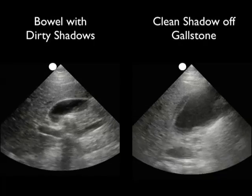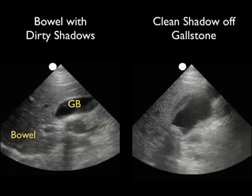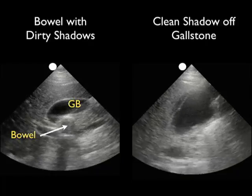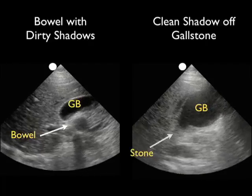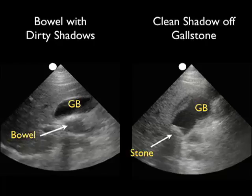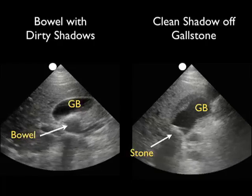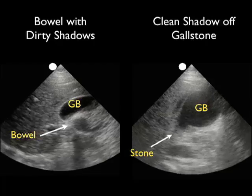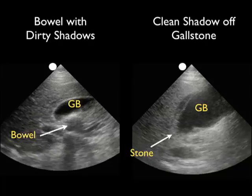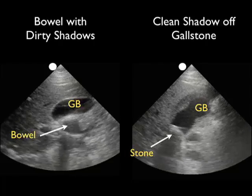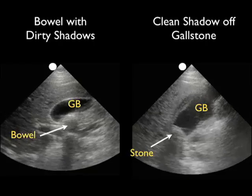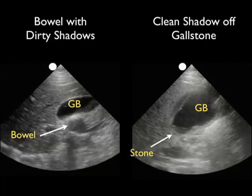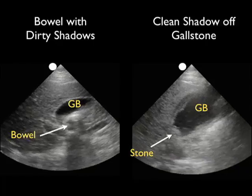One potential pitfall on right upper quadrant sonography is that occasionally a loop of bowel may come right up against the wall of the gallbladder and be mistaken for a gallstone. In the video clip to the left, we see a loop of bowel against the posterior wall of the gallbladder with a bright hyperechoic appearance that could be mistaken for a gallstone. However, the loop of bowel is clearly outside the gallbladder wall. Also, the shadows coming off the air-filled bowel are dirty shadows — not completely dark, with areas of white within the dark areas. In the clip to the right, we see an impacted gallstone at the neck of the gallbladder, hyperechoic and within the lumen, with a clean shadow — completely dark — without those light areas that characterize air shadows.